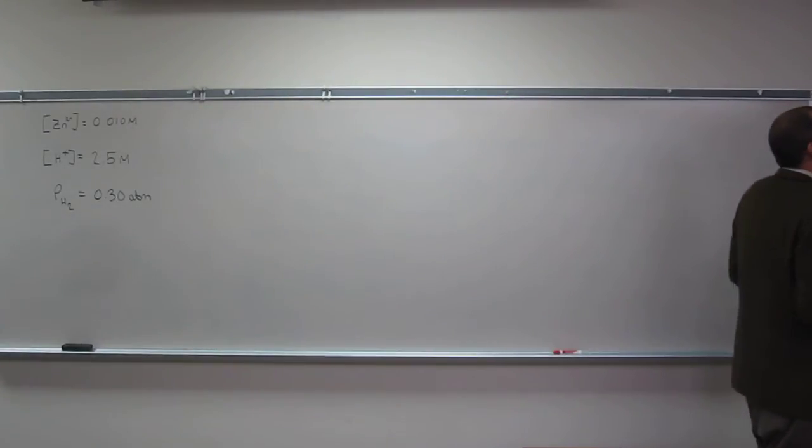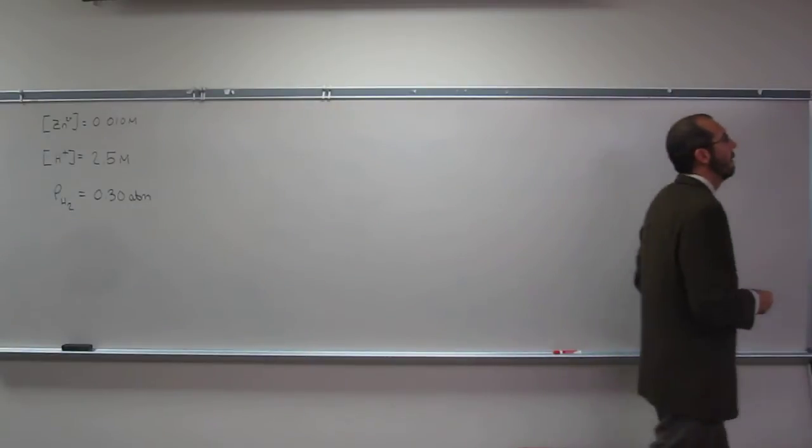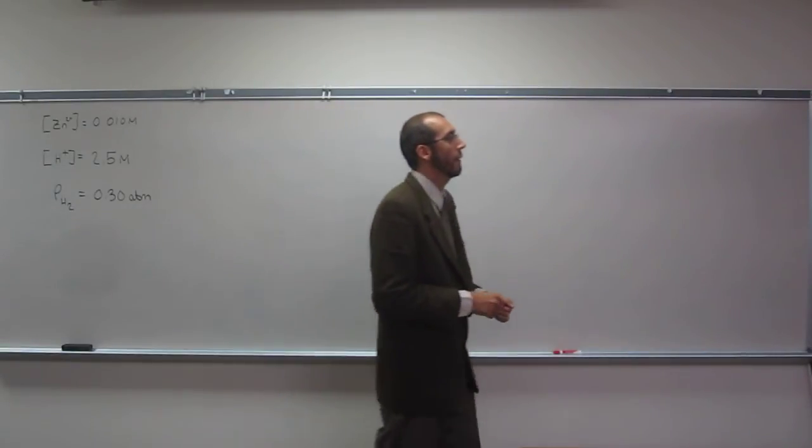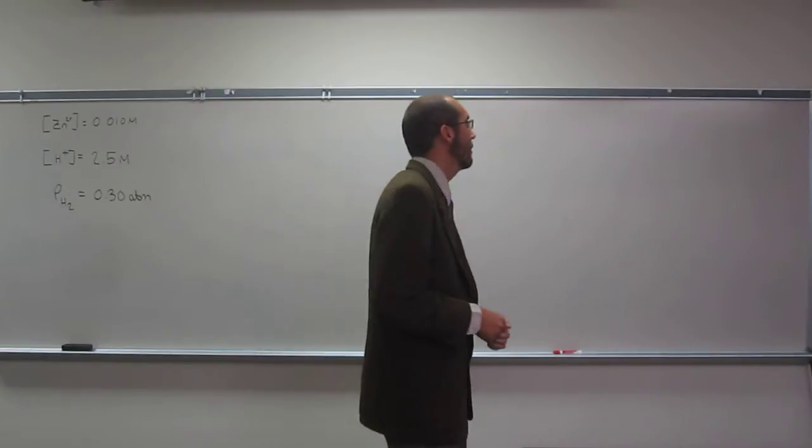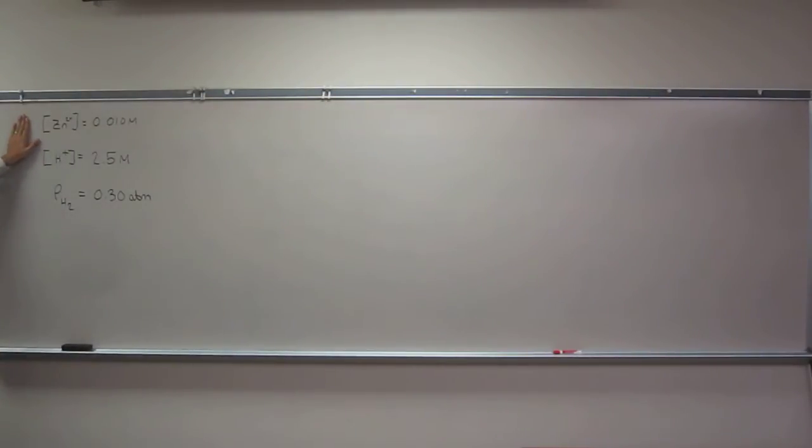So we're testing a voltaic cell consisting of a zinc, zinc 2 plus half cell, and a hydrogen proton half cell under the following conditions. The zinc 2 plus concentration is 0.010 molar. The proton concentration is 2.5 molar, and the pressure of hydrogen is 0.30 atm.